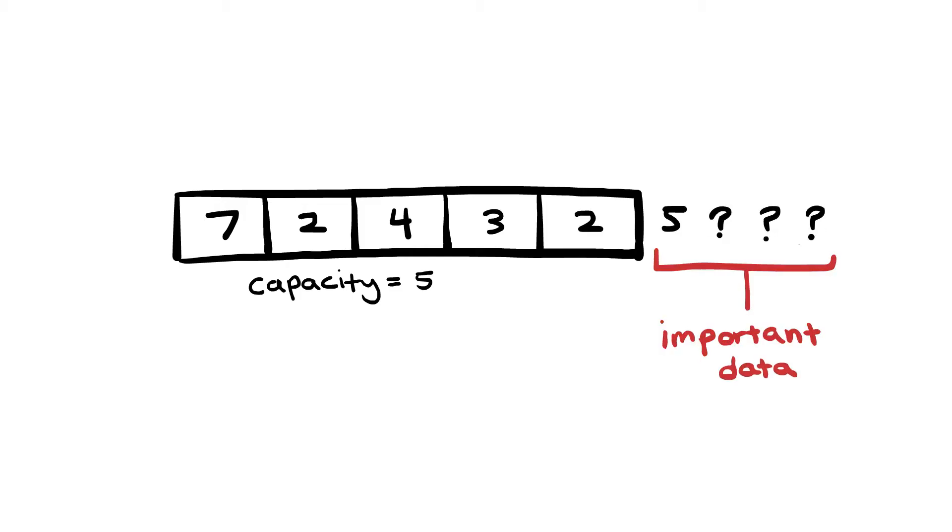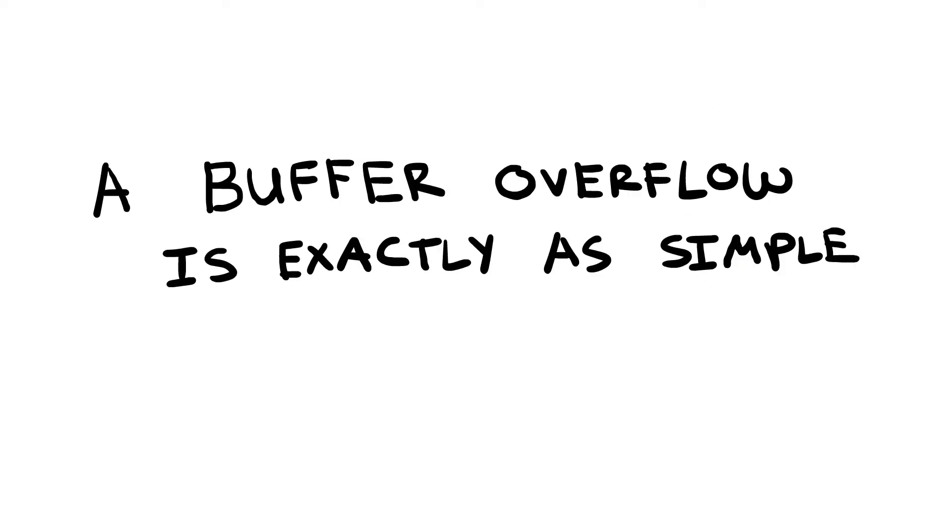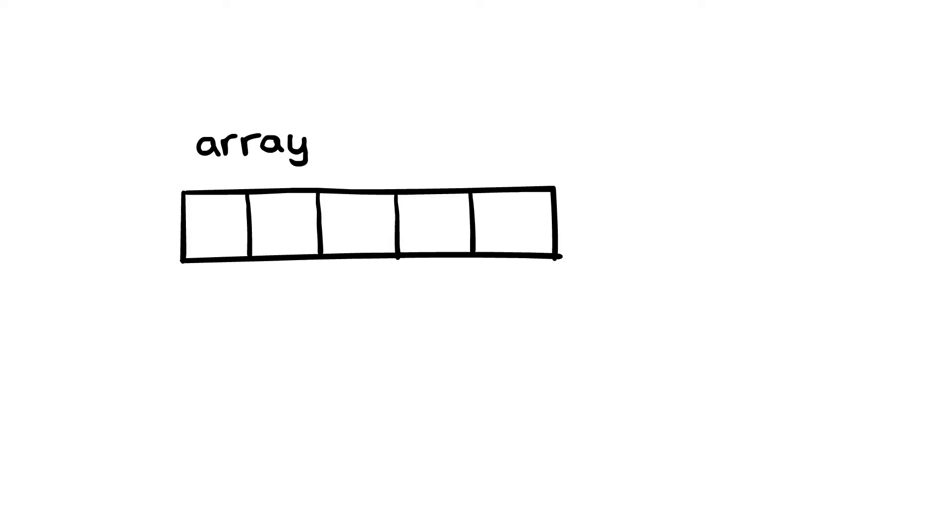Exactly what important data can be overwritten? We'll come back to that. All you need to know for now is that a buffer overflow is exactly as simple as it sounds. You have an array, aka buffer, and you overflow it.